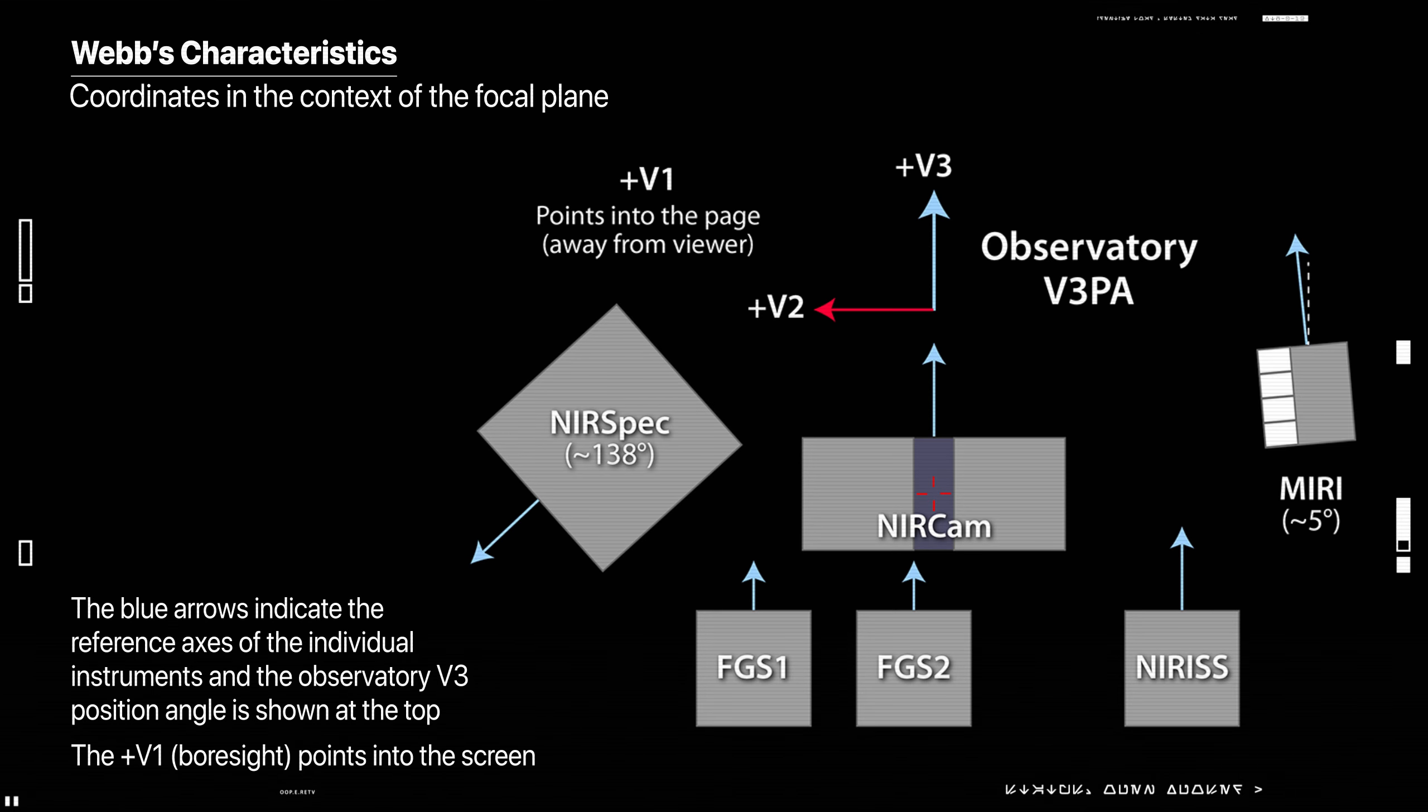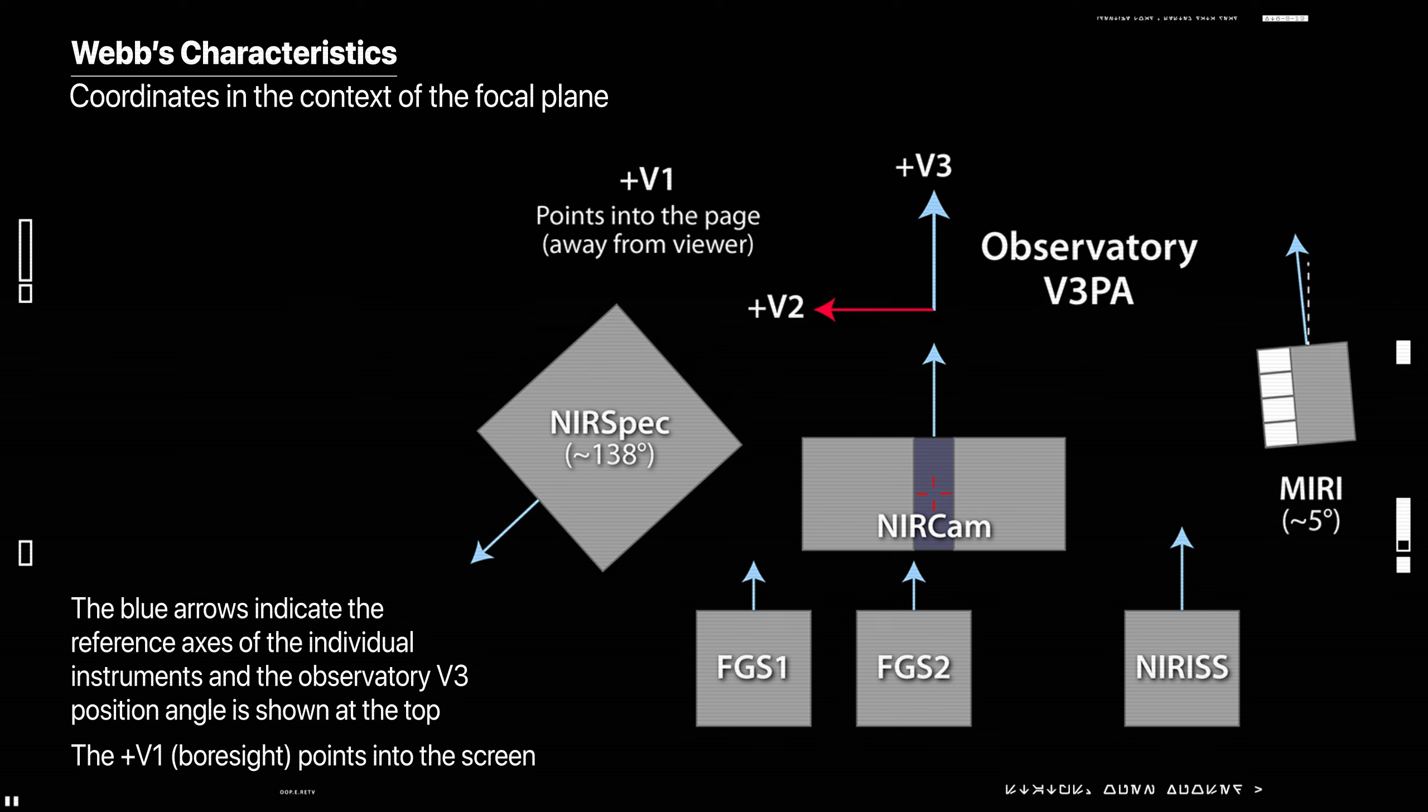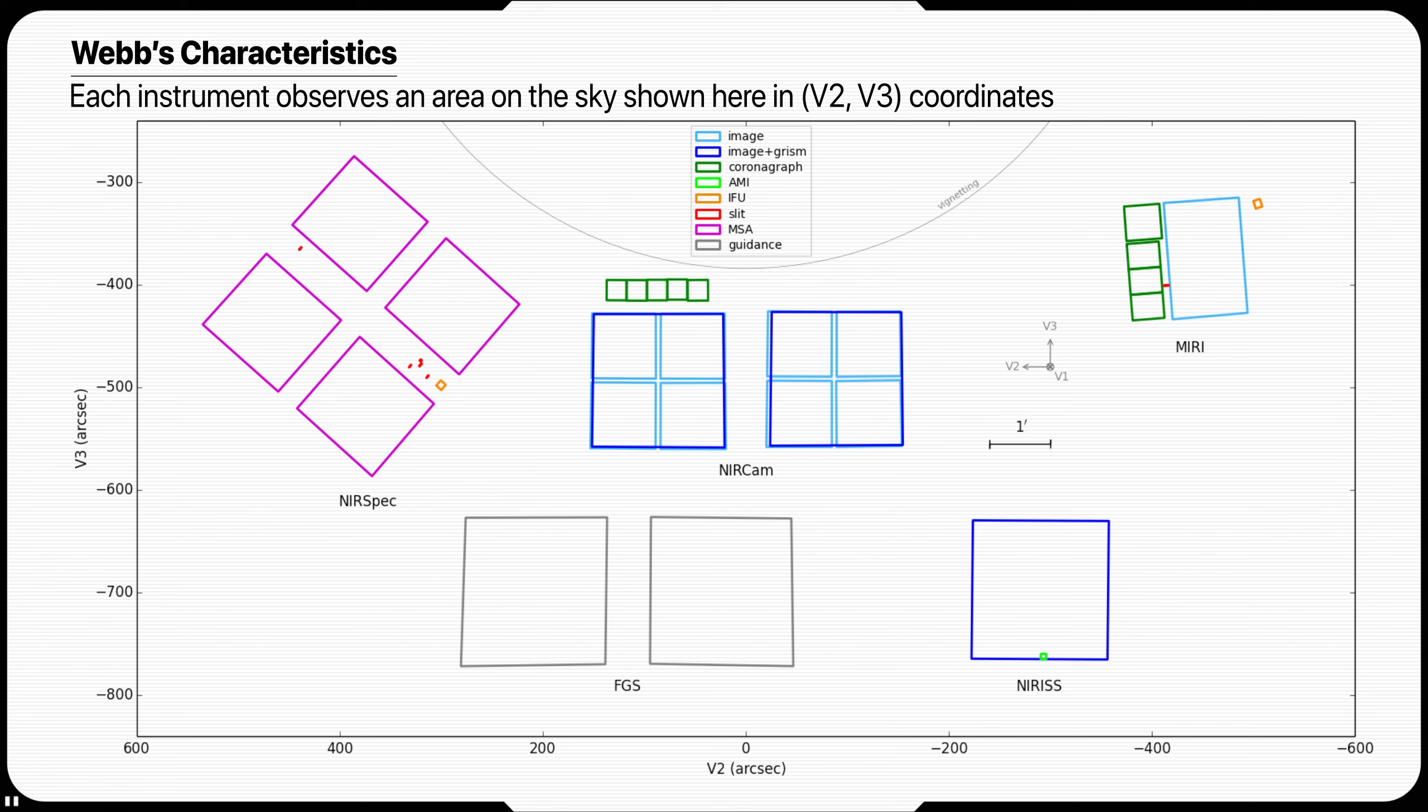Here you can see the connection between the V-axis and the James Webb focal plane. The V3 axis is the primary observatory reference axis used in operations to connect the individual instrument reference axes, or blue arrows, in the planning and scheduling system to the celestial sphere. This is especially important for any observations where the positioning of the instrument fields of view on the sky is important.